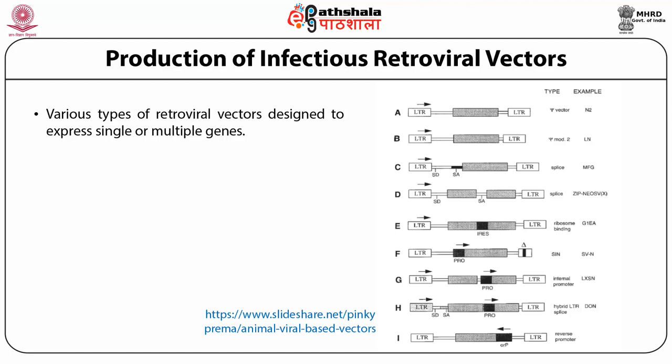In figure A, we have the commercial vector known as N2. Then we have the omega vector 2, known as LN. By insertion of two more segments we have vectors available with different names such as MFQ. Further insertions produce splicing variants, and different vectors can be produced by adding different components — as seen in figures E, F, G, H, and I — depending upon the gene we want to express and the purpose for which we want to use the viral vector.